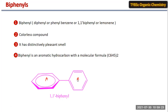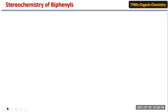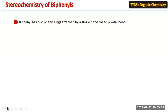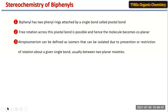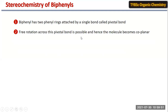This is the basic structure of biphenyls. Now we are going to consider the stereochemistry of biphenyls. The biphenyl has two phenyl rings attached by a single bond known as the pivotal bond. Free rotation across the pivotal bond is possible, and the molecule becomes coplanar.